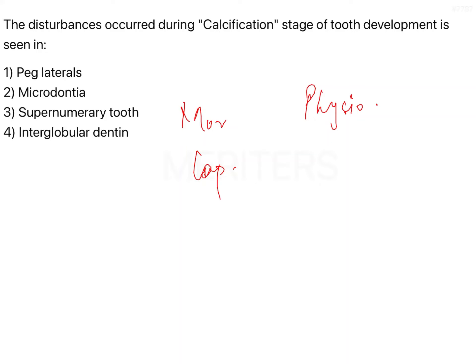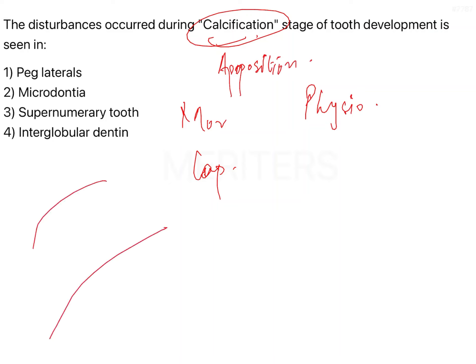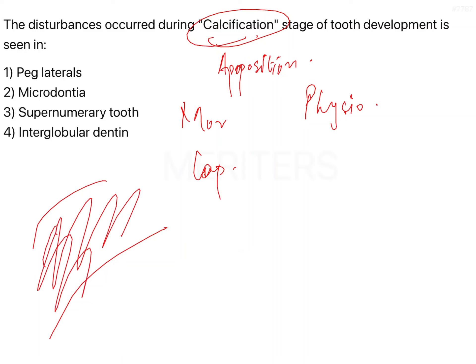In the apposition stage, apposition is nothing but calcification. It is called apposition because calcium starts getting deposited on a bed of proteinaceous matrix formed for every single tissue — for enamel you have the enamel matrix, for dentine you have predentine, for cementum you have cementoid, and for alveolar bone you have osteoid. On this matrix, calcium gets deposited in the form of hydroxyapatite, opposed onto the matrix.